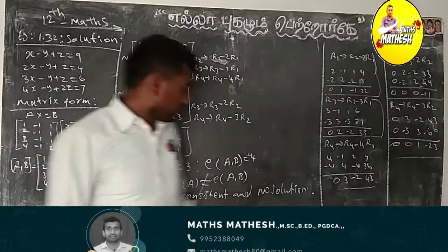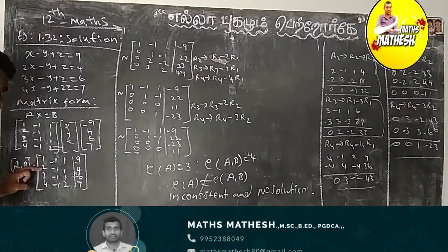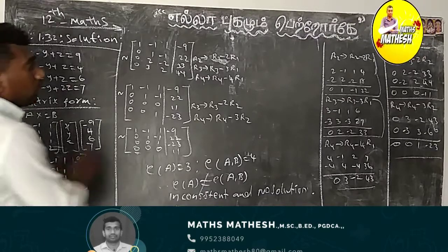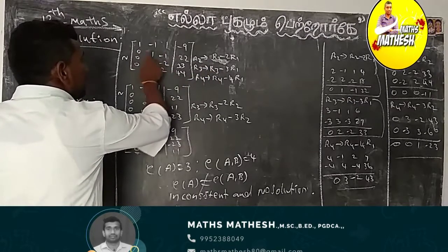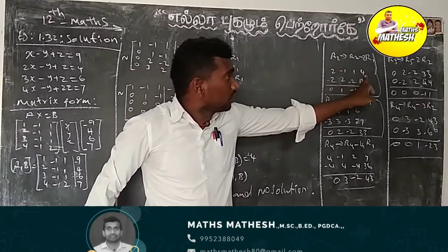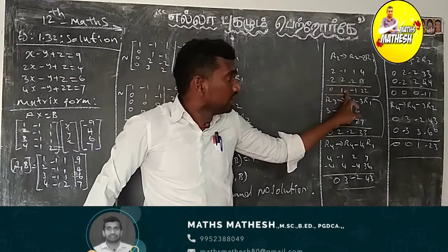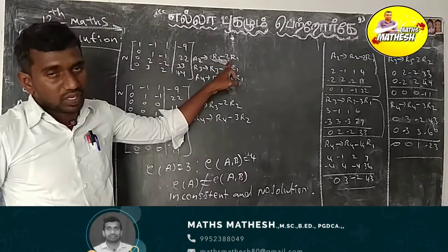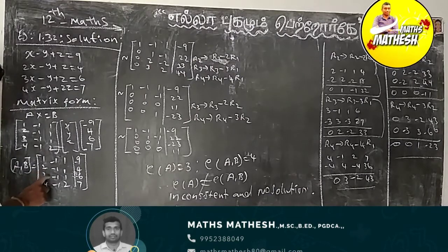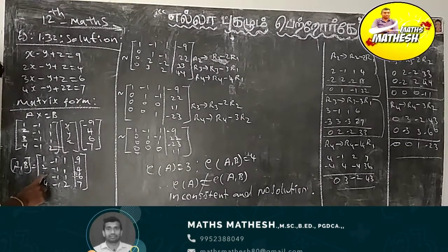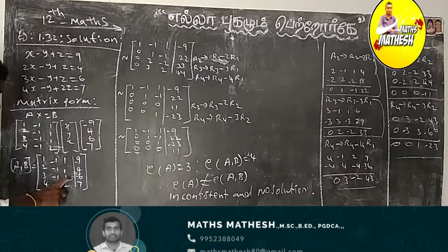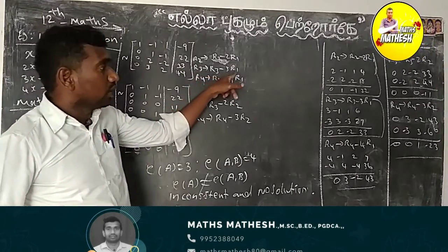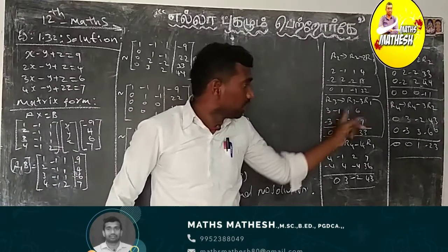Let's look after R1 and R2. This is R2 minus 2R1. R2 gives R2, R2 minus 2R1. Next we will see R3 minus 3R1. This is R3 minus 3R1.